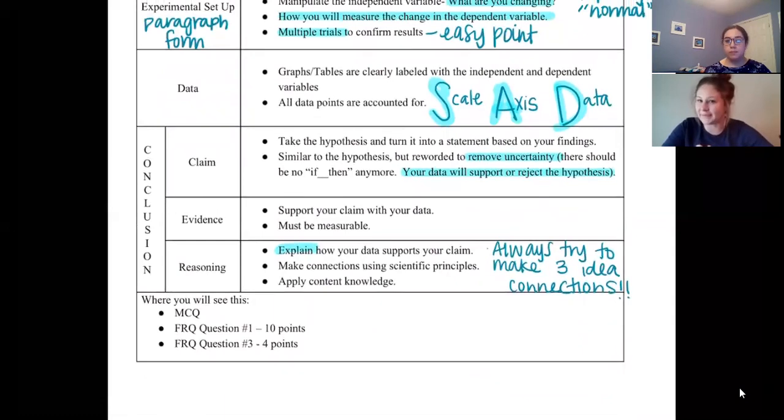So on the actual AP exam, where you can expect to see this information being used will be in some of your multiple choice questions. There might be a lab that they've shown you and they might ask you to identify certain parts. So it could be a multiple choice question. You will definitely see it on your FRQ question number one, that is going to be worth 10 points. Just a reminder, your FRQs are worth half of your score for the AP exam. So if you have 10 points coming from question one that are going to be lab designed like this, it's probably pretty important. You will also see it on question number three. That is going to be four points of your FRQ total.